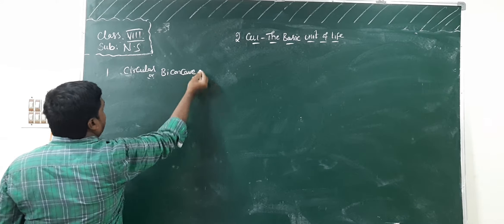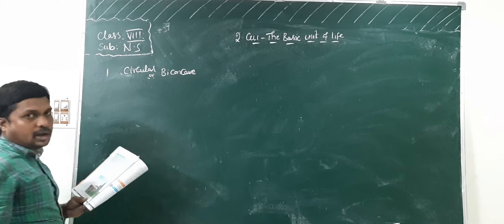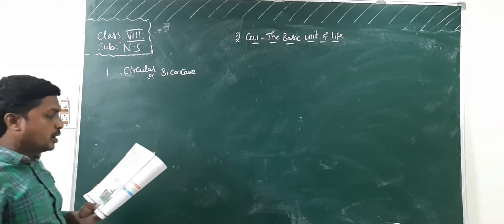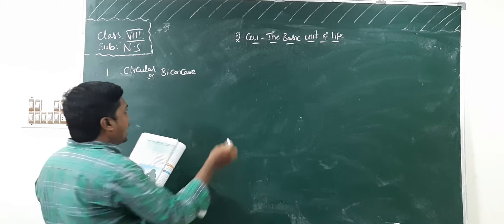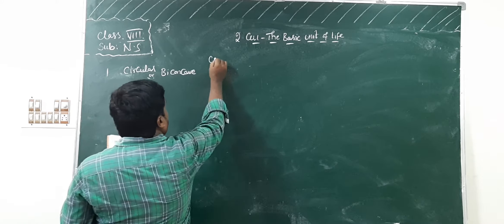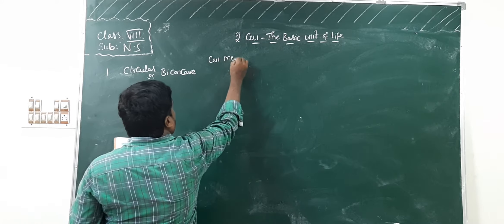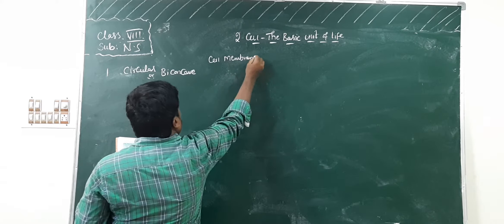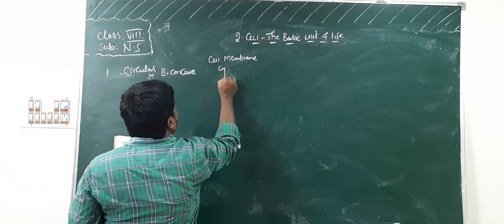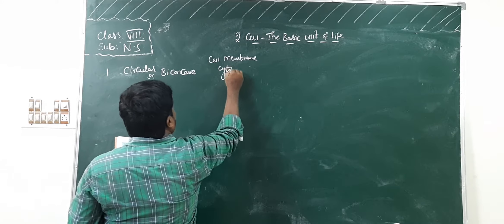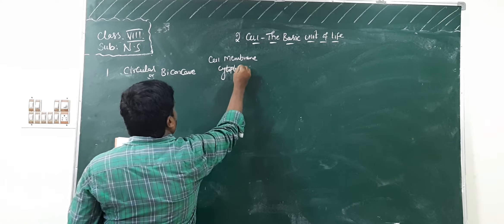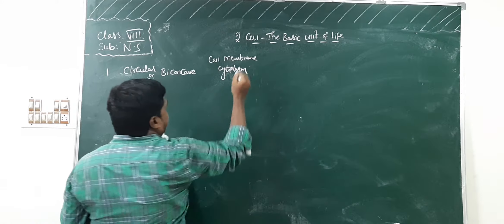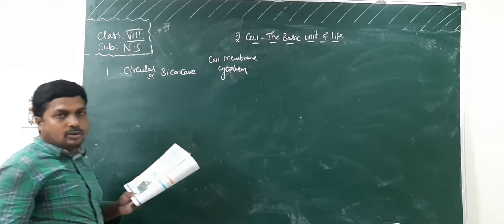Write down: circular or biconcave. For the parts, write down: cell membrane and cytoplasm. They do not have a nucleus. Write that down.